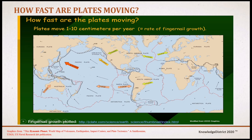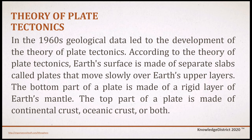How fast are plates moving? The rate of plate motion is typically an inch or two per year, or 1 to 10 centimeters per year. Although this seems slow on the human time scale, the movement over hundreds of millions of years fills and destroys land masses. In the 1960s, geological data led to the development of the theory of plate tectonics, which states that Earth's surface is made of separate slabs called plates that move slowly over Earth's upper layers.